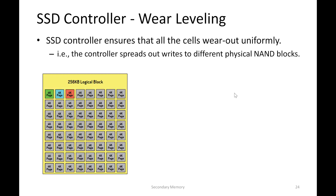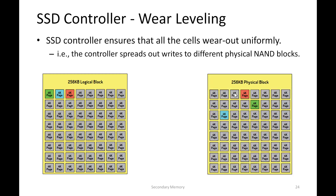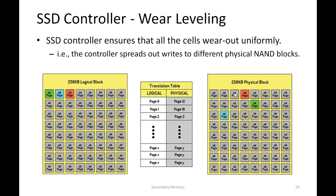What wear leveling basically does is spread out the writes to different physical NAND blocks and pages. For example, if this is our logical block and we have three pages — green, blue, and red — they can be mapped to different physical pages. Looking at the FTL, page 0 has been mapped to physical page 12 (the green one), page 1 is mapped to page 18 (the blue page), and page 2 is mapped to page 3 of the physical block. This mapping is done by identifying the number of reads each page has undergone, and pages with minimum endurance cycles are selected for the next writes.